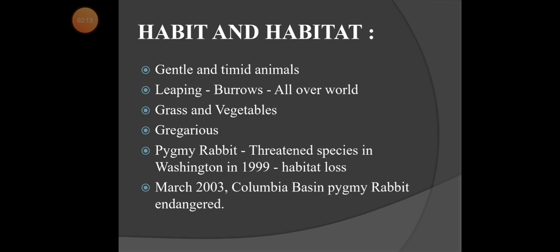The rabbit eats grasses and vegetables like turnip, lettuce, carrot, and when bred in houses, household vegetables are also given. It is a gregarious animal — gregarious means it moves in groups of three or four animals together.